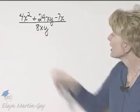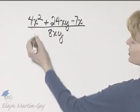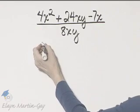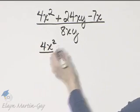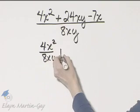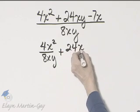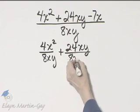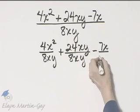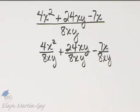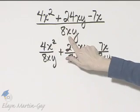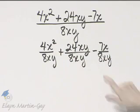So notice in this example we are dividing by one term, so we will write each term in the dividend, or each term in the numerator if you have it here, over the one term that we are dividing by: 8xy plus the next term in the numerator, 24xy divided by 8xy, and then minus 7x over that same 8xy. Each term in the numerator, or this is actually the dividend, but each term in the numerator over that same term in the denominator.